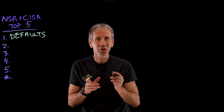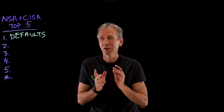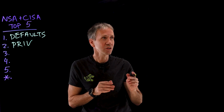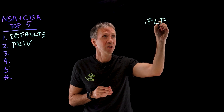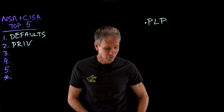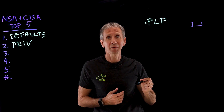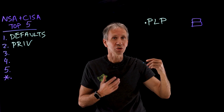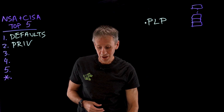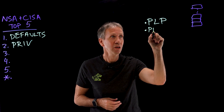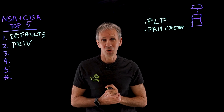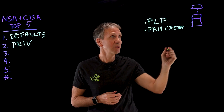Number two on the list was improper separation between user and admin capabilities — basically, managing privileges. There's the well-established principle of least privilege, which says someone should only have access to the extent they need it to perform their job. When somebody comes into the organization, you give them certain admin rights, and as their job changes, more rights get added. This continues to increase and we end up with what's referred to as privilege creep. We're very good at giving capabilities but not so good at taking them away — and the principle of least privilege says we need to be equally good at both.